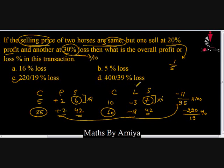To summarize the method: first make the ratio of cost price, profit, and selling price for each transaction. Equate the two selling prices, then find total loss or profit over total cost price and multiply by 100. I hope it is clear — for any doubt, feel free to ping me. Thanks.